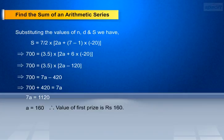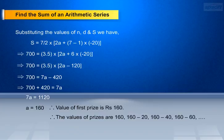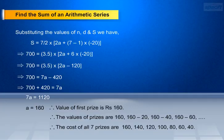Therefore the value of the first prize is 160 rupees. As each prize is 20 rupees less than its preceding prize, the values of all the prizes will be 160, 160 minus 20, 160 minus 40, 160 minus 60, and so on. Therefore the costs of all 7 prizes are: 160 rupees, 140 rupees, 120 rupees, 100 rupees, 80 rupees, 60 rupees, and 40 rupees.